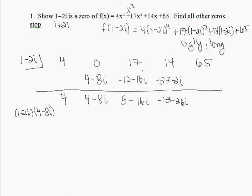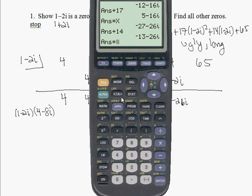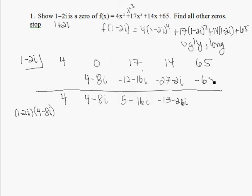And then I multiply that result by 1 minus 2i, and I should get negative 65, because we want to show that this is a 0. So you multiply that result times x, and I get negative 65, which is 0. So I'm going to get rid of this here.